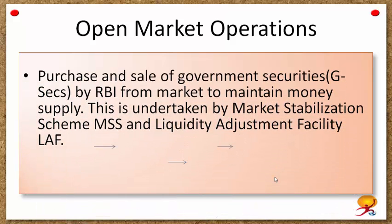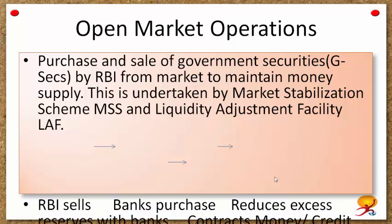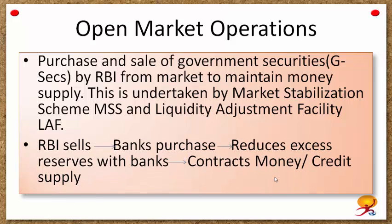Coming to Open Market Operations. These are purchases and sales of government securities by RBI from the market to maintain money supply. This is undertaken by the Market Stabilization Scheme, or MSS, and the Liquidity Adjustment Facility, or LAF. RBI sells government securities which are purchased by commercial banks using their reserves. This reduces excess reserves with the banks, which ultimately contracts money or credit supply in the economy, and vice versa.